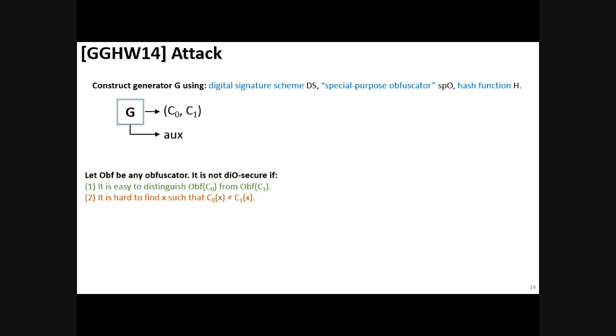Now let us recall the construction that was used by Garg et al. to show their implausibility result. And then we will extend it to show our construction. They construct the generator using a digital signature scheme, a special-purpose obfuscator, and a hash function.